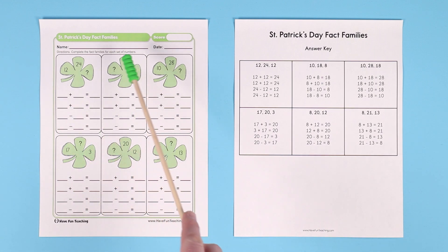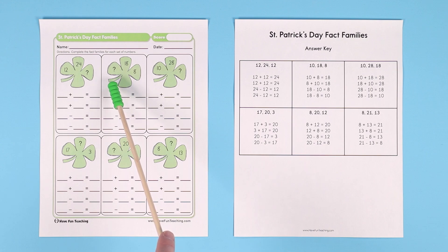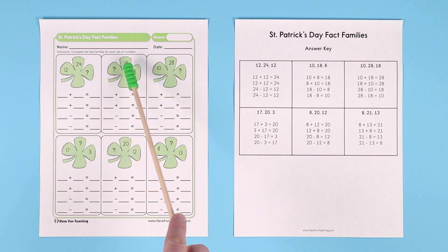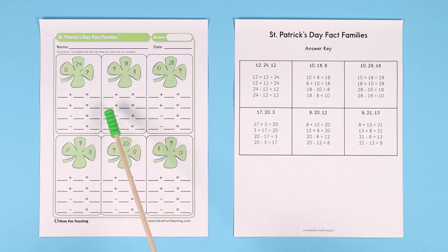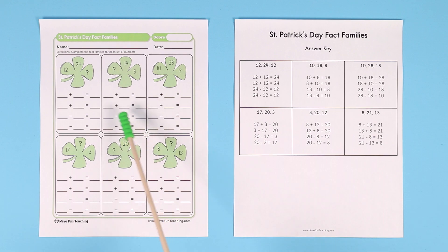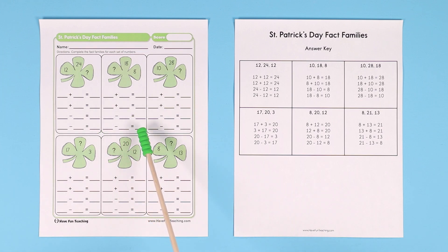Let's try this again with three different numbers. So you have 8 plus the mystery number, which would be 10, equals 18. So you start out: 10 plus 8 equals 18. Flip around the numbers: 8 plus 10 equals 18. And then for the subtraction, you start with the biggest number: 18 minus 10 equals 8, and 18 minus 8 equals 10.